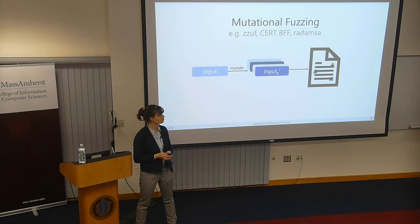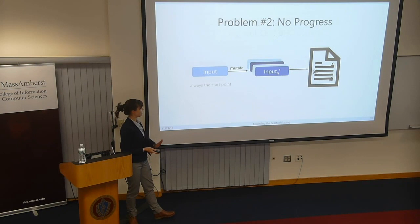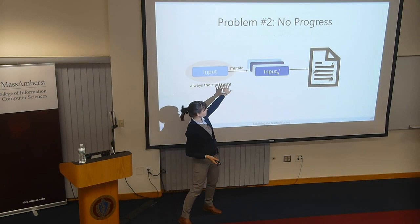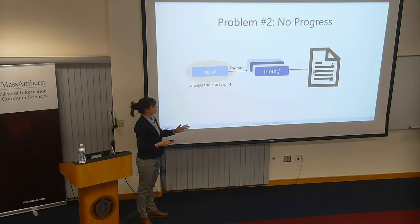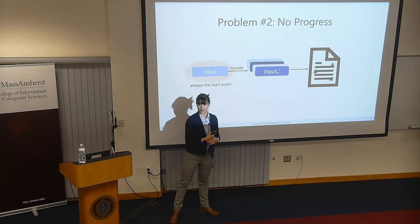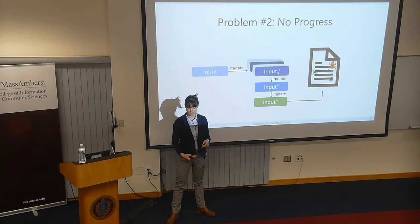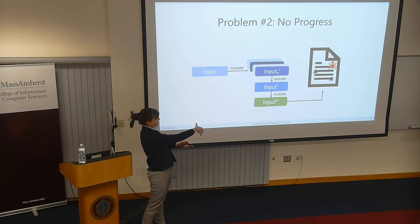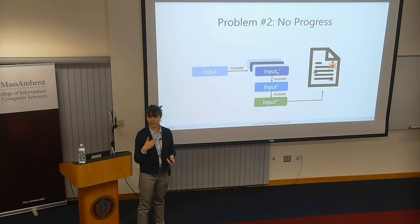But just mutation on its own is not the end of the line. You're always starting from one particular input, and depending on how you're mutating it, there's only so many places you can go. You're only going to find bugs this way if the bug-revealing input is one step away from your original one. What if the bug-revealing input only emerges after a sequence of mutations? So having one starting point on its own isn't really going to get you anywhere.